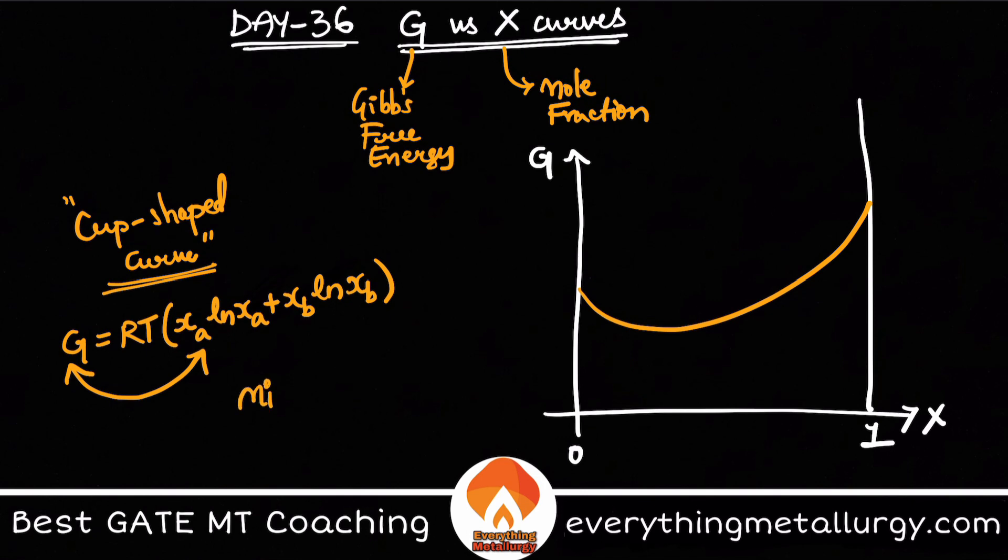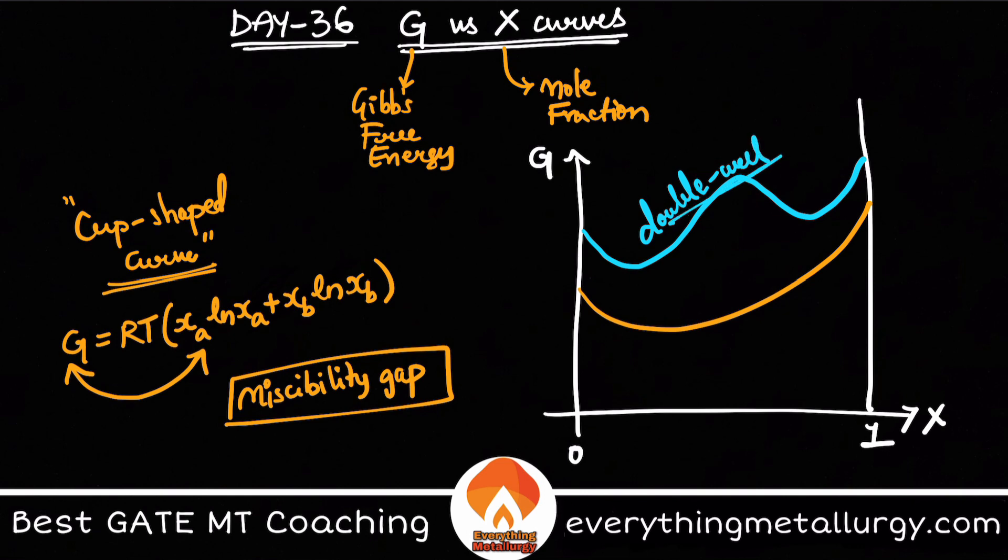If you have some miscibility gap, then this curve will look differently. So basically if you have some miscibility gap, this curve will look something like this, which we call a double well. So why and what? I can't cover all of that concept in just five or ten minutes. Of course it's all covered in our video course. So if you have a miscibility gap in the system you will see a double well, whereas if you have a normal curve then it will be a cup-shaped curve.